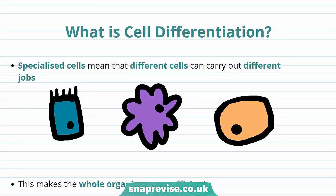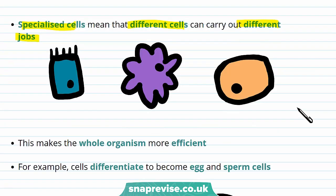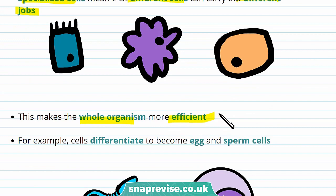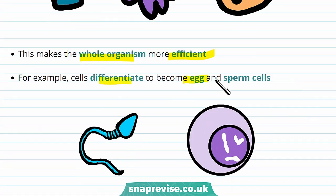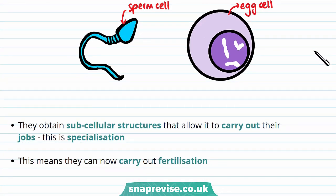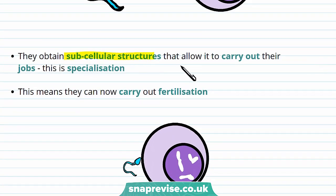Cell differentiation means that different cells can carry out different jobs. For example, sperm cells are specialised for reproduction and red blood cells are specialised for the transport of oxygen. As each cell has its own job, this makes a whole organism more efficient. Cells can differentiate to become egg and sperm cells. This is a sperm cell and this is an egg cell. When they differentiate and become specialised, they obtain subcellular structures that allow them to carry out their jobs — this is specialisation.